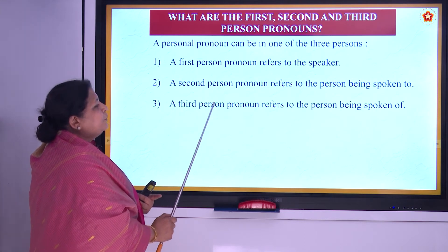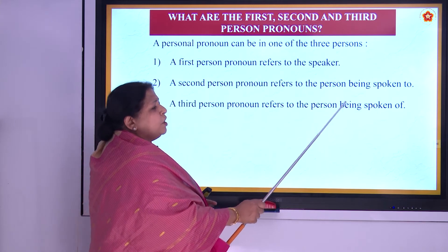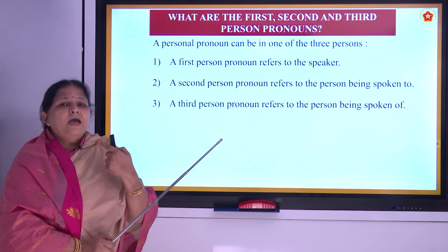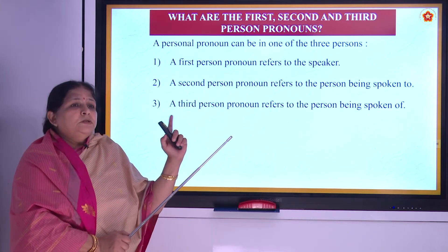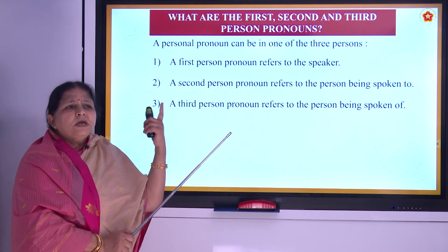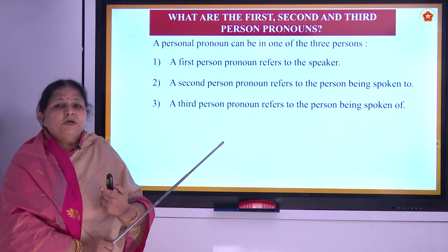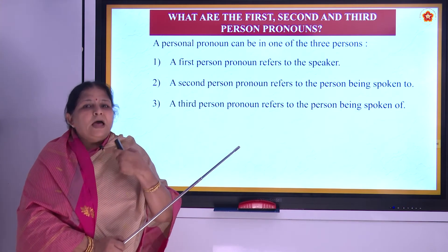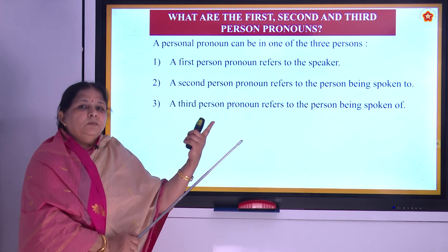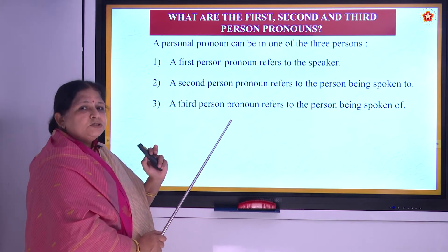The third person pronoun refers to the person being spoken of. For example, I am speaking to you about a person who is not here — 'See, Rohan has done like this. He has not come to class today.' So I am the first person, you are the second person, and Rohan is the third person because he is not there and I am speaking about him.